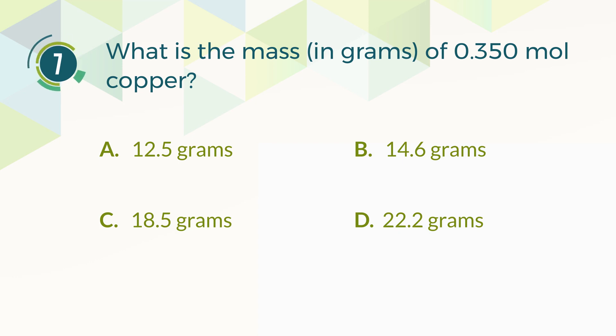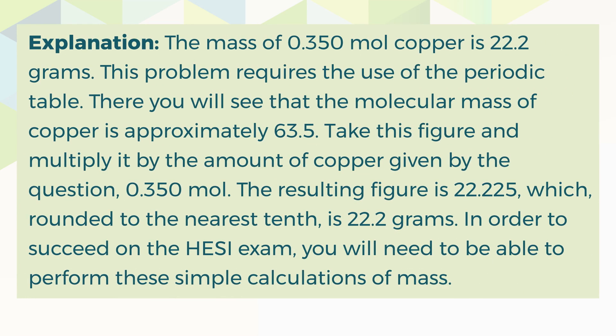The correct answer is D, 22.2 grams. The mass of 0.350 moles of copper is 22.2 grams. This problem requires the use of the periodic table, where the molecular mass of copper is approximately 63.5. Multiply this figure by the amount of copper given, 0.350 moles. The resulting figure is 22.225, which, rounded to the nearest tenth, is 22.2 grams. In order to succeed on the HESI exam, you will need to be able to perform these simple calculations of mass.